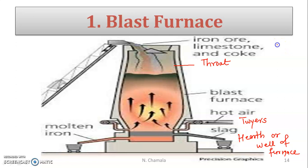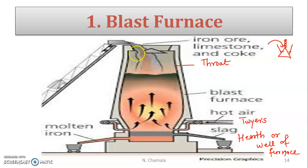At the mouth of the furnace it is provided with a cup and cone arrangement. The cone is provided with a continuous long iron chain. When you want to pour the charge, the cone is closed and charge comes in; when you lower the iron chain, the charge is fed into the furnace, then it is pulled up to close the mouth.